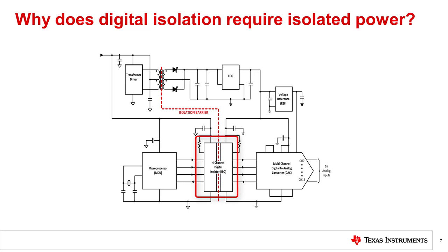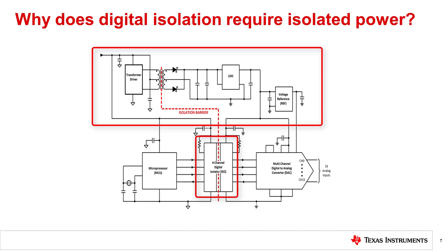In previous videos, we've introduced digital isolators and the need for separated isolated power. Without isolated power supplies, the benefits of isolation are lost as the isolation barrier would simply be shorted. Isolated power subsystems require careful design for overall system performance to be optimized. Temperature rise from poor power transfer efficiency, data corruption due to emissions, and incorrect bypass capacitors or transformer selections can cause undesirable effects on the output signals.